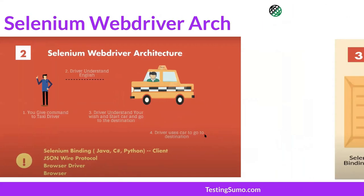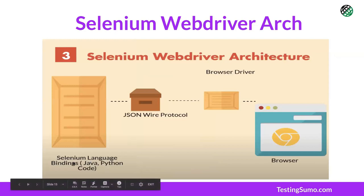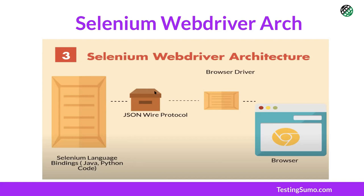Similarly, we have Selenium language bindings — code written in Java, Python, or Ruby. Using the JSON Wire Protocol, you communicate with the browser driver, and the browser driver communicates with your actual browser, giving it instructions. When you write driver.get('google.com') in your Java file, it makes an HTTP request with a JSON payload to the browser driver.